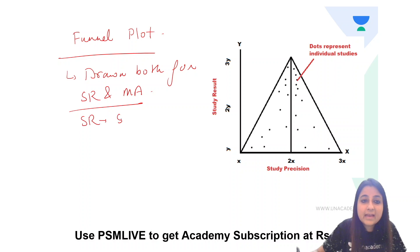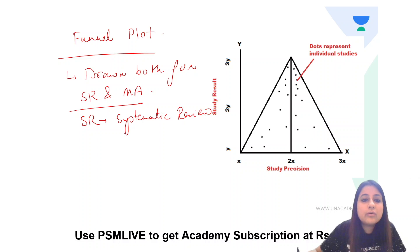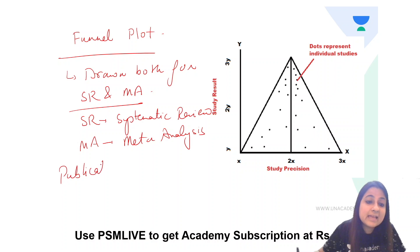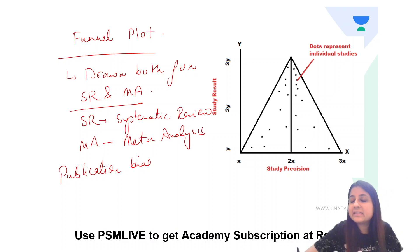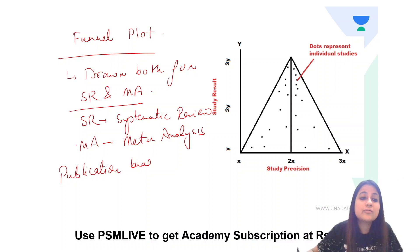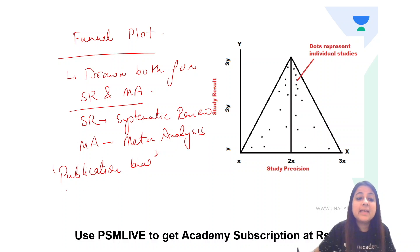Funnel plot is drawn both for systematic review and also for meta-analysis. What does a funnel plot tell us about? It tells us about publication bias. In a systematic review and meta-analysis, we are doing a review of the previous published as well as unpublished literature. Whether they are of good quality is reflected by drawing this funnel plot. It denotes publication bias.